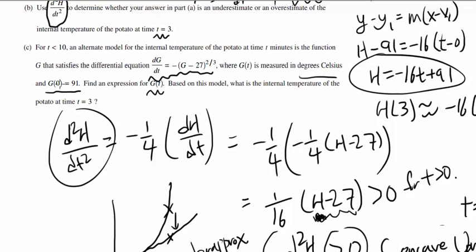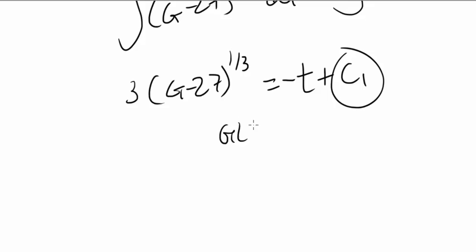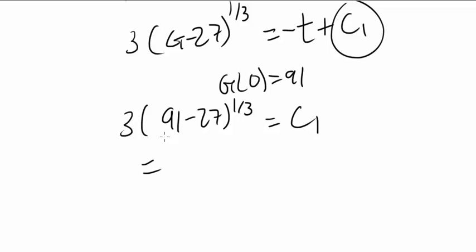We know at time, you know g(0) is equal to 91, so you know g(0) equals 91. So let's plug this in. 3 times (91 minus 27) to the 1/3 is 0 plus c₁. So what's c₁? 91 minus 27 is 64, a cubic root that gets us 4, so you know c₁ is 12.